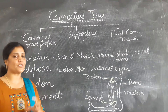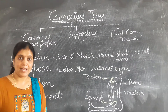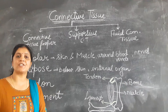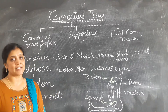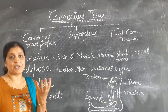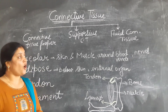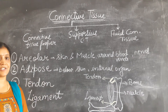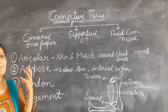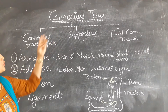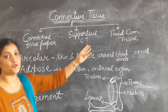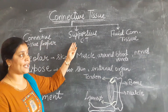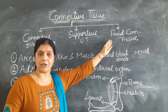Connective tissues are loosely packed and embedded in matrix. Now, what is matrix? Matrix is a jelly-like substance which can be rigid. On the basis of the type of matrix present, connective tissue is further divided into three types: connective tissue proper, supporting connective tissue, and fluid connective tissue.